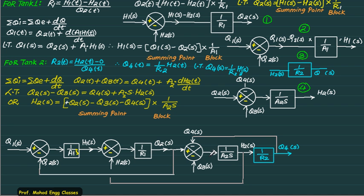Now you have to solve this problem by identifying the inputs and outputs. There are two inputs: Q1S and Q3S, and one output Q4S. This is called a MIMO system. To find the transfer function, assume Q3 equals zero and solve for Q4 in terms of Q1.